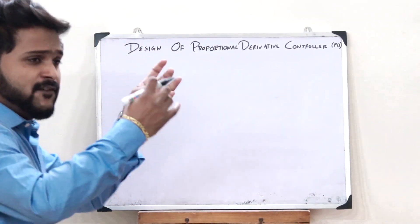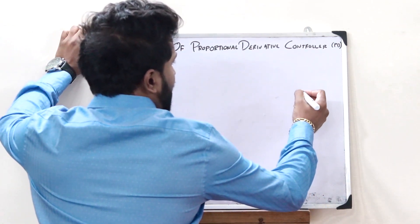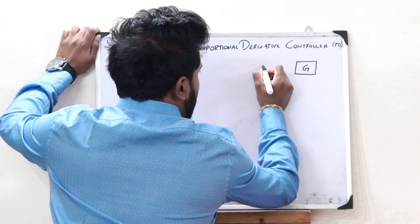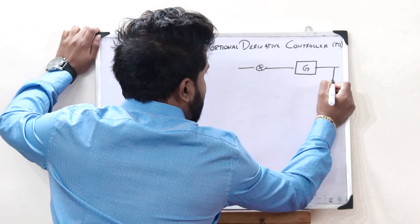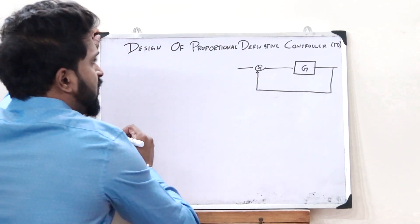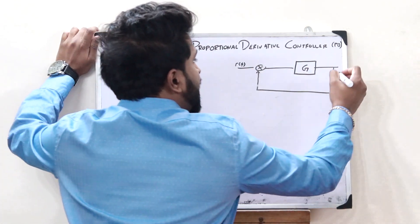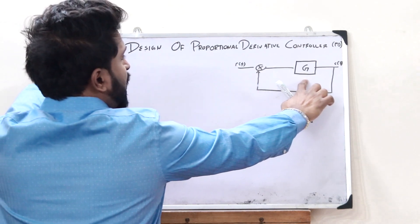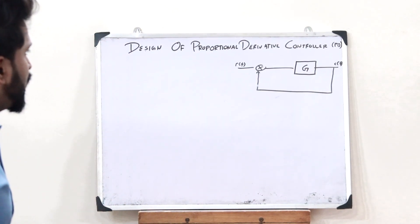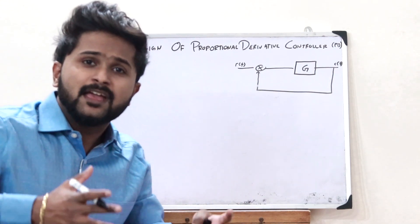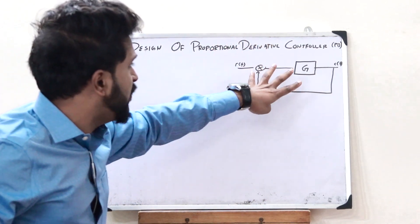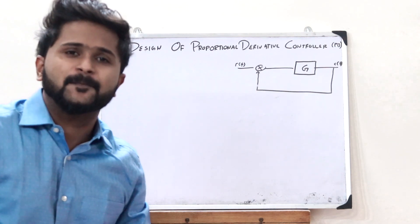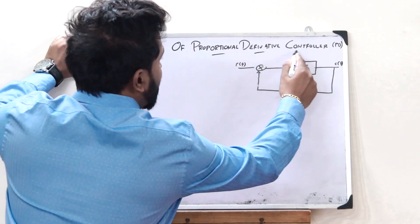Let us consider a particular unit negative feedback control system. In the case of a unit negative feedback control system, first we would have a forward loop gain say G over here, and then here we will have a negative feedback element provided over here. If this is the input signal R of T, then this is the output signal C of T. This C of T goes over here and is passed through this particular forward loop transfer function G. Now, in this particular control system, if we want to increase the stability of this system without disturbing the steady state error, that is when we use a proportional derivative controller.